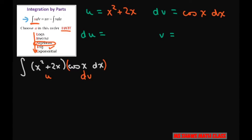Now let's figure this out. The derivative of u is 2x plus 2 dx, and v is the antiderivative of cosine, which is sine x.